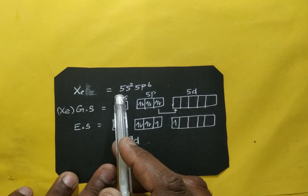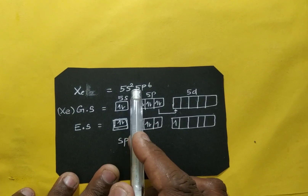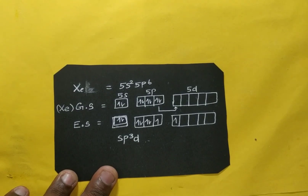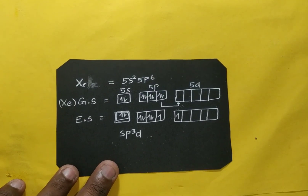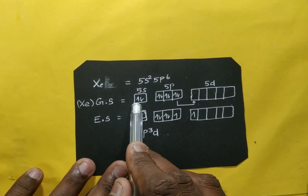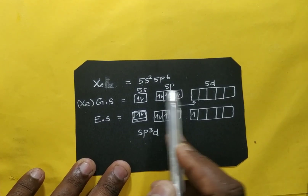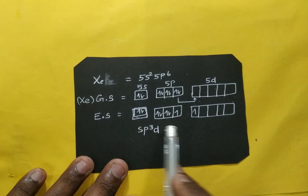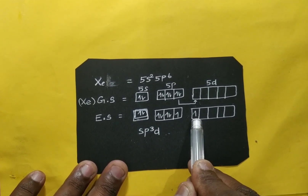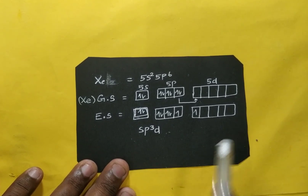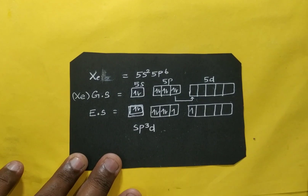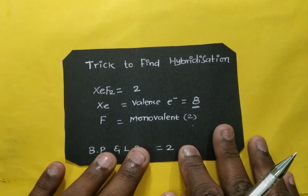The electronic configuration of xenon in its valence shell is 5s² 5p⁶ — totally eight valence electrons. In the ground state it is fully packed. If we promote one electron to the d orbital in the excited state, we get one s, three p, and one d orbital — that gives sp³d hybridization.